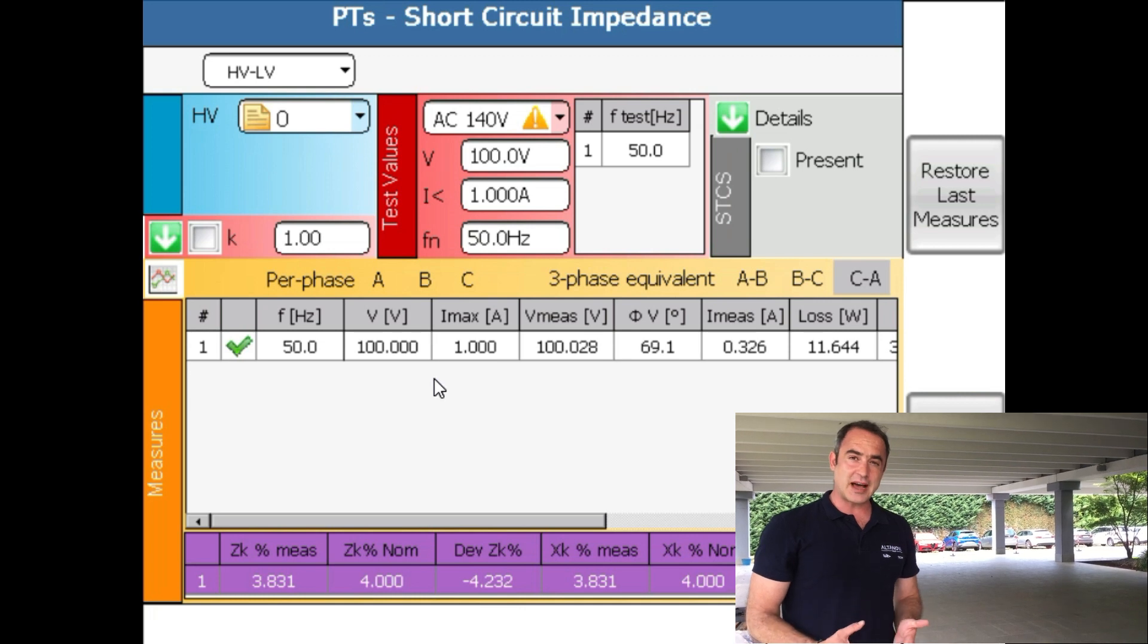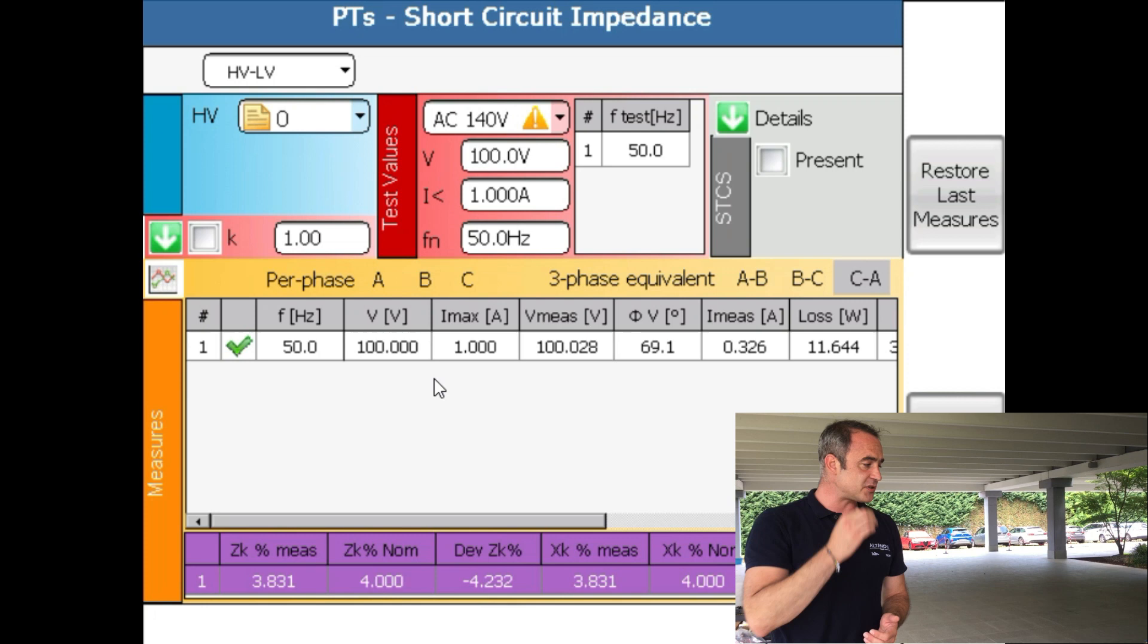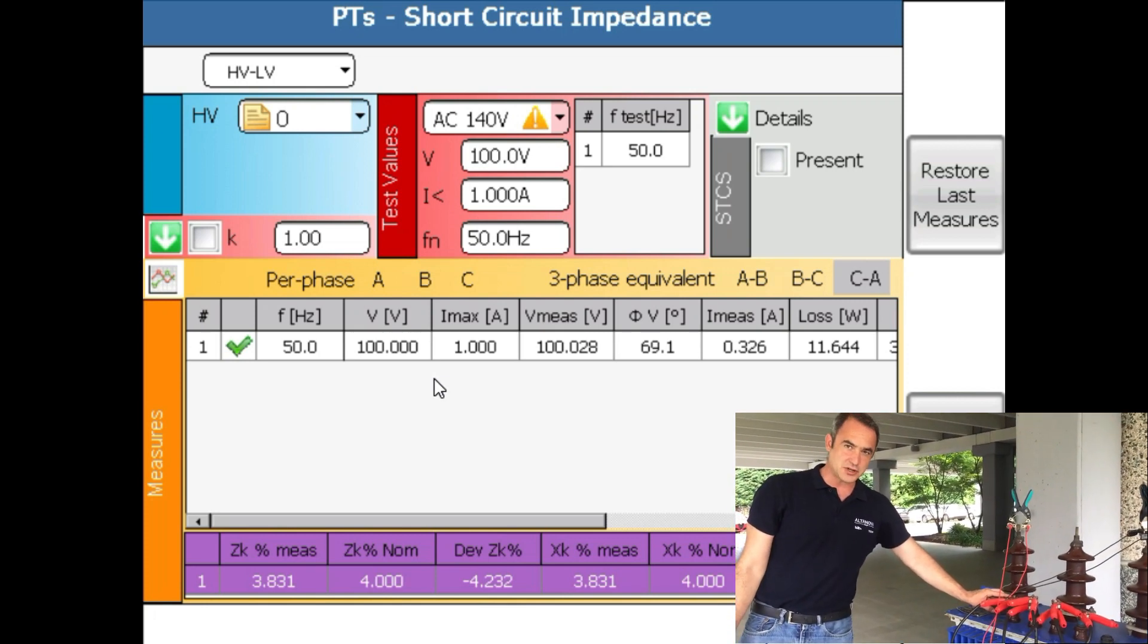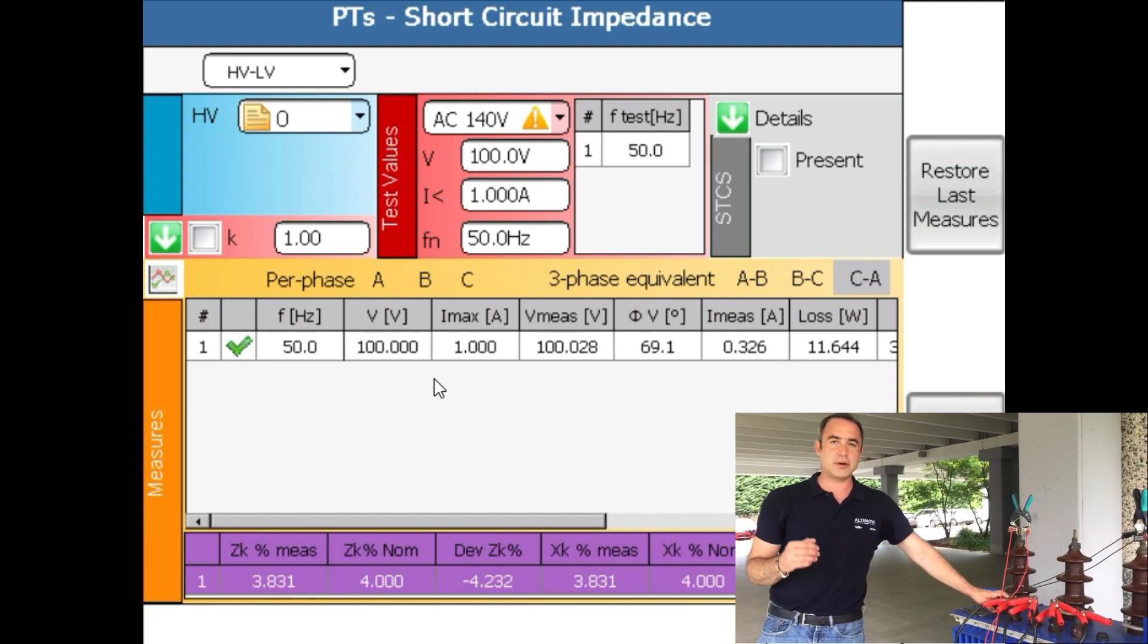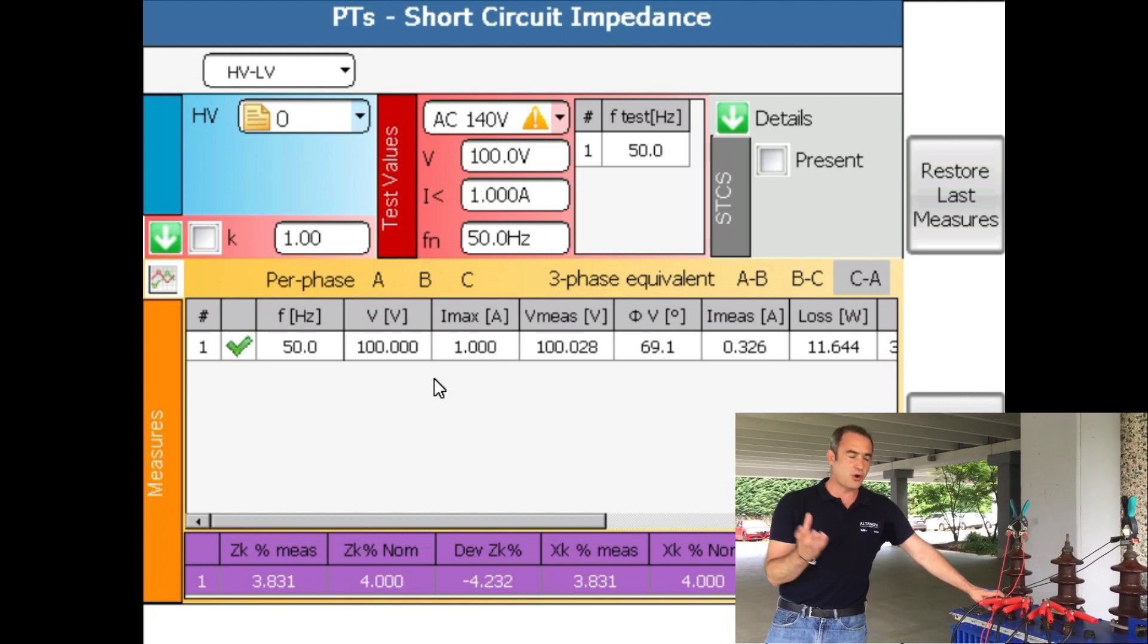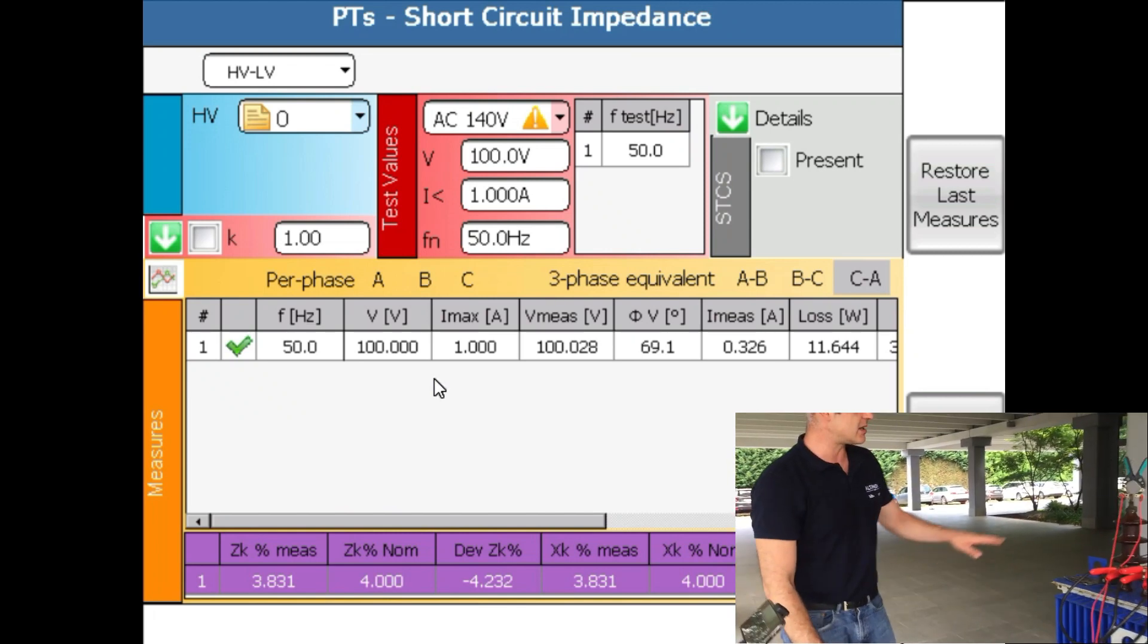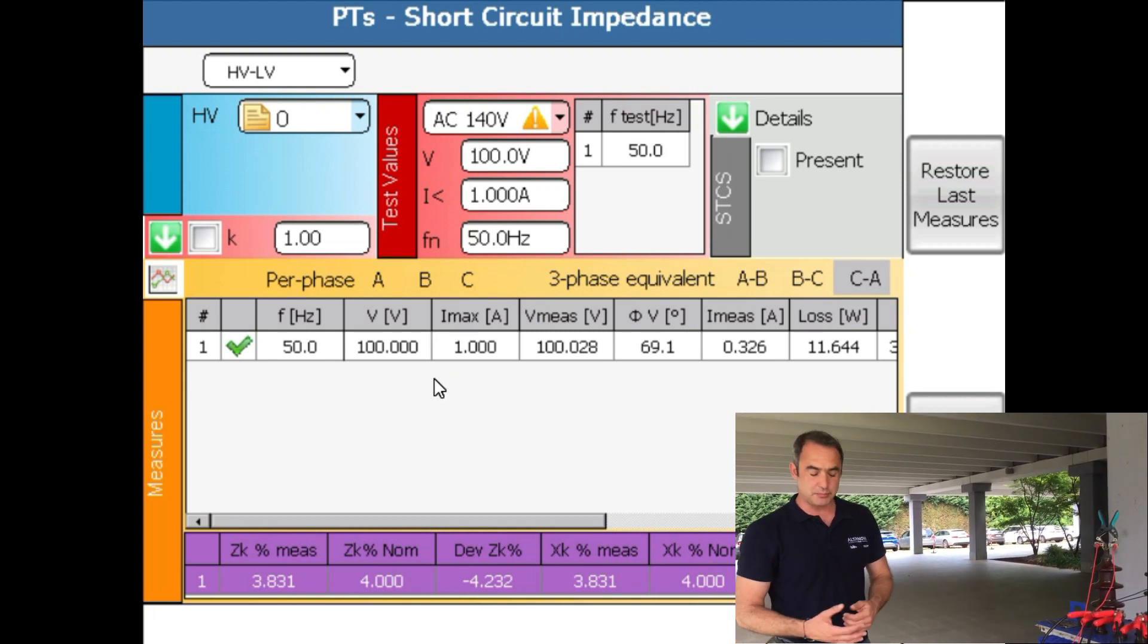Of course what you can do now to make this test a little bit more interesting is to change these positions of the tap changer and do the same test on different positions, which would give you a much better overview of the whole state of the transformer. But if you get more or less good results for this position of tap changer then you don't need to repeat anything.